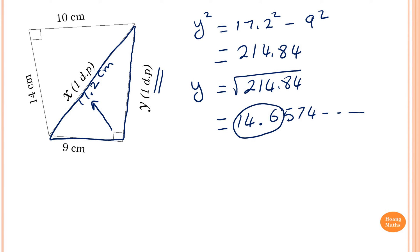Looking at the digit after the first decimal place: the digit after 6 is 5, so we're at the halfway point, meaning we round up. Therefore y is equal to 14.7 centimeters.